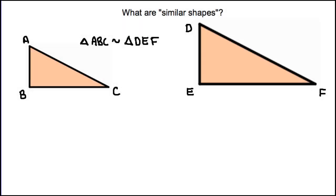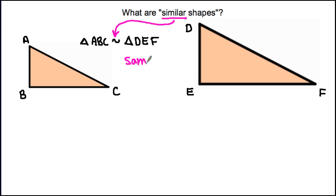In this video we're going to explore the concepts of similarity and congruency in terms of how it relates to shapes. The first thing we're going to explore is what is meant by the term similar shapes. We see two different triangles and a statement that says triangle ABC squiggle triangle DEF. This squiggle symbol means that the two shapes are similar — the same shape but different sizes.